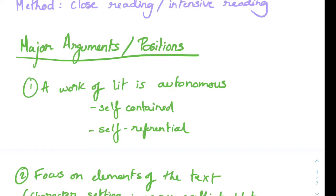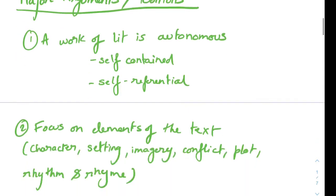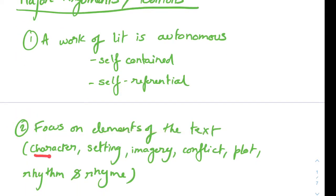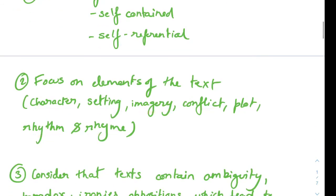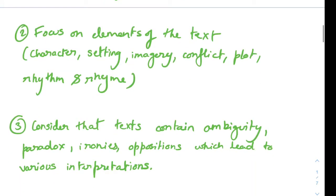You don't need to go and Google the author's name. The author is not really relevant at all. Another key position is to focus on elements of the text — for example, character, setting, imagery, conflict, plot, rhythm, and rhyme. All these elements are what you are looking for, and this is how you're going to criticize this work of art.